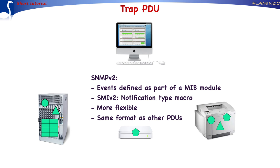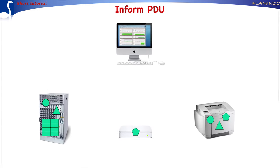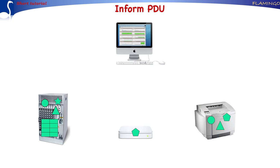Since the manager does not acknowledge reception of the TRAP PDU and SNMP uses the unreliable UDP transport protocol to send its PDUs, the agent cannot be sure if the trap was received by the manager. Therefore, version 2 of the SNMP protocol standard added the INFORM PDU which, like the SNMP v2 TRAP PDU, is able to send notifications to the manager. However, as opposed to the TRAP PDU, after reception of the INFORM PDU the manager sends an acknowledgement back to the agent in the form of a response PDU.